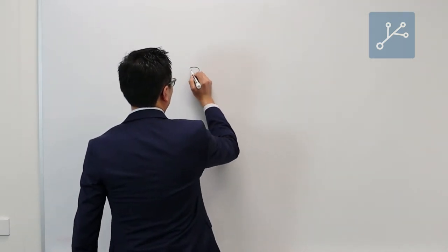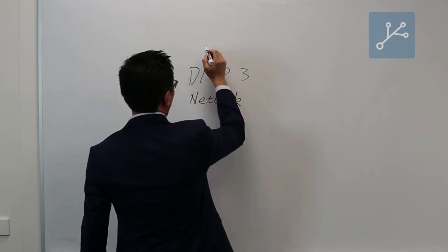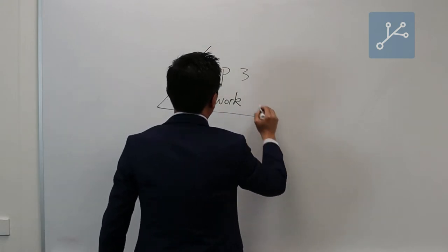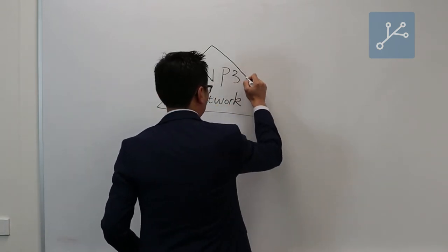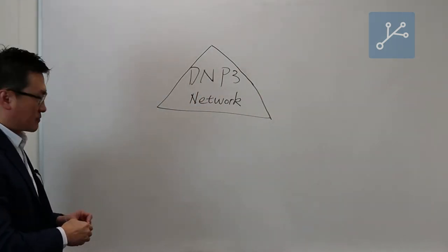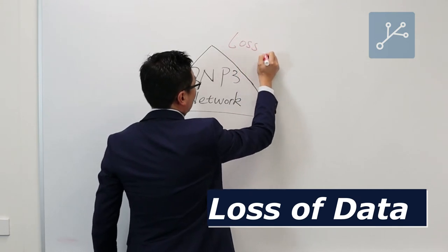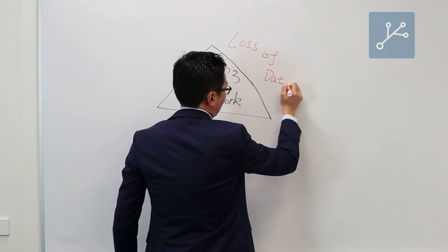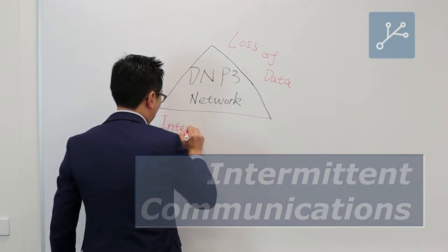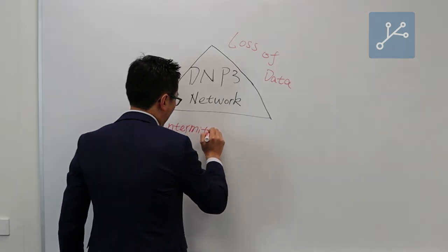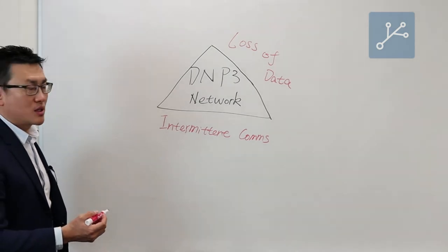So we have the DNP3 network here, and if we draw a triangle around it, the first major issue is called loss of data. The second major issue is called intermittent communication. The third issue is called excessive traffic.